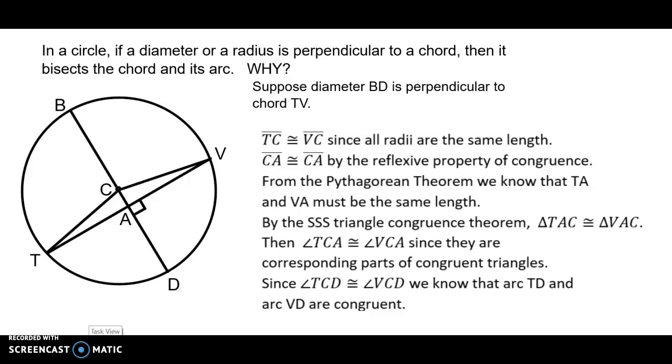Okay, I'm going to talk just a little bit more about a couple of the ideas that were in previous videos. This result in a circle: if a diameter or a radius is perpendicular to a chord, then it bisects the chord and its arc.